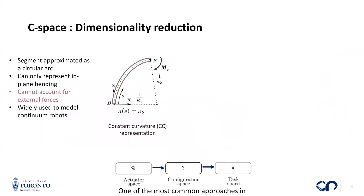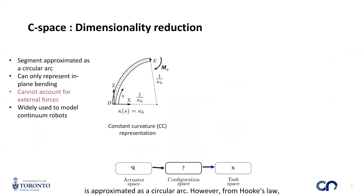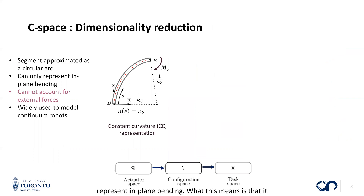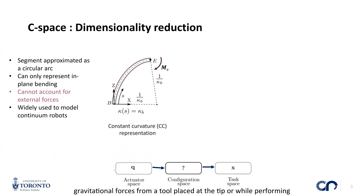One of the most common approaches in literature is the constant curvature representation, where the entire segment is approximated as a circular arc. However, from Hooke's law, we know that it can only model constant moments and represent in-plane bending. This means it cannot account for variations in curvature resulting from, for example, gravitational forces from a tool placed at the tip or while performing pick-and-place operations.